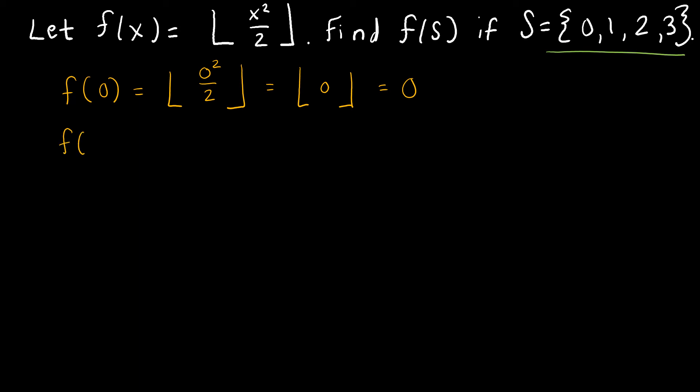If I'm looking at f(1), f(1) would be 1 squared over 2 and the floor function. 1 squared is 1, 1 divided by 2, that just gives me 1 half. So what is the floor function of 1 half? That is also 0.